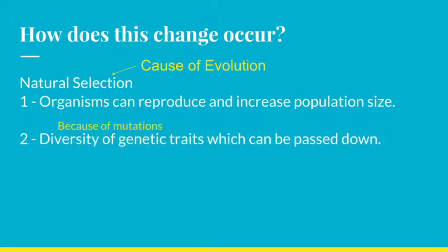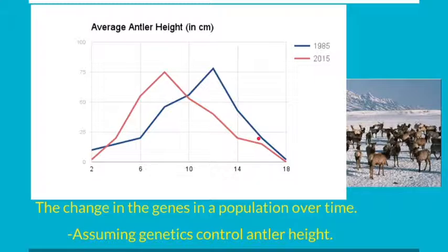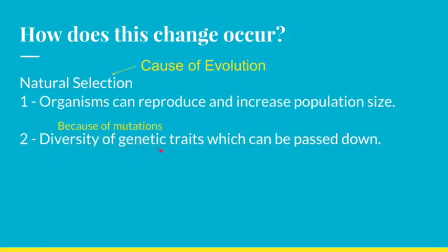Number two, there is a diversity of genetic traits which can be passed down. Within a population, there is genetic diversity because of mutations — the DNA, the genes have become mutated and changed ever so slightly over time. Those mutations build up in a population and create slight differences. In the 1985 elk example, there were some elk with really short antlers and some with really big antlers, but on average, the majority had antlers around 12 to 13 centimeters. This range is what we mean by the diversity of genetic traits, and if they're genes, they can be passed down.